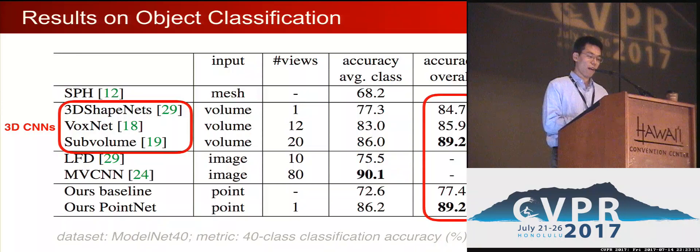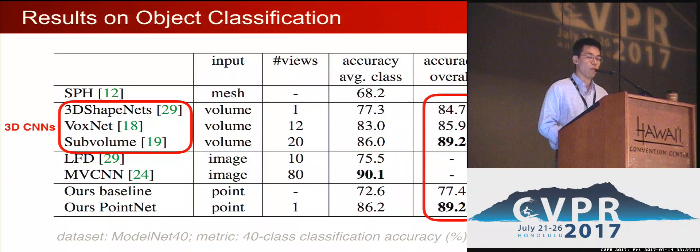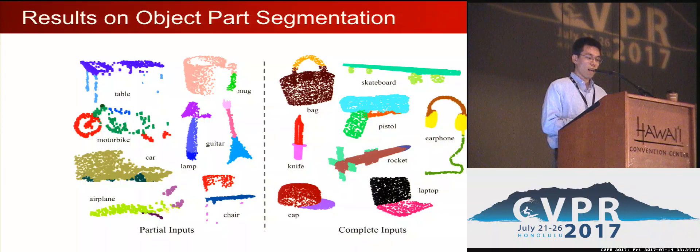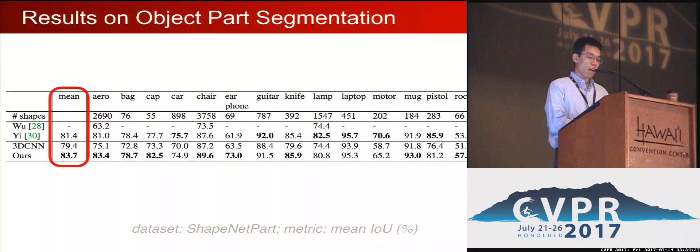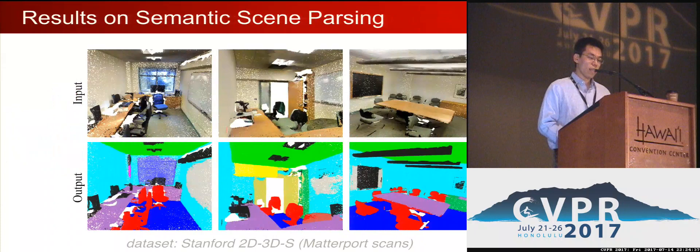Now let's look at some results. For object classification, we evaluate on the ModelNet40 shape classification dataset, sampling 1,024 points from surfaces of each shape. We show that PointNet, as the first deep learning architecture on point cloud, is already achieving better or on-par results with several well-engineered 3D CNNs. We also show results of object part segmentation from the ShapeNet part dataset on both partial and complete input. Quantitatively, PointNet has surpassed the previous state-of-the-art using traditional features and a baseline using 3D CNNs on object part segmentation.